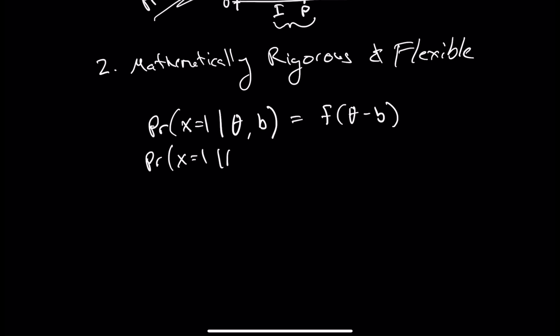add more parameters. We can say not only is it a function of the location, but it's also might depend on how strongly that item relates to the underlying construct. And so now we add what is called a discrimination parameter or this little a.